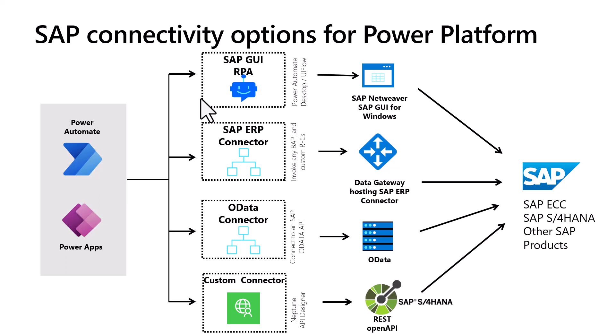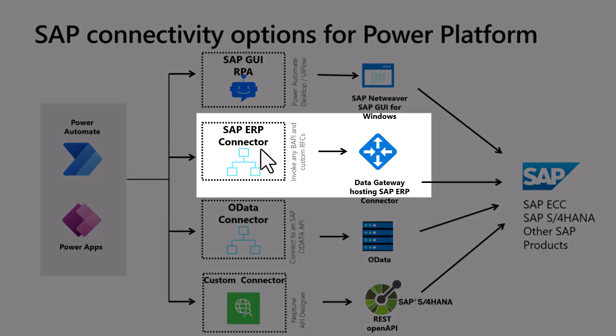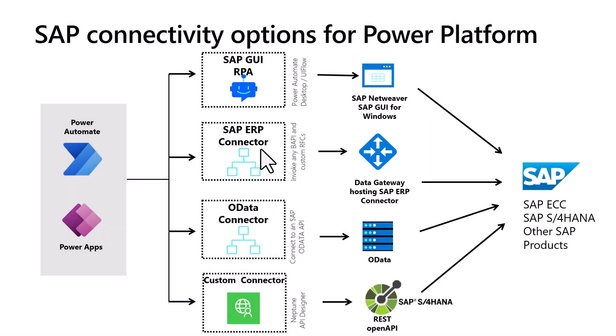It is a UI-based automation. When we move to API-based integration — like the certified SAP ERP connector — the connectivity is generally more stable, but you need more skill and knowledge about what's happening in your SAP system. With the ERP connector, you can fetch table information or trigger BAPIs and RFCs, but you need to know the technical names of tables, the name of the BAPI or RFC, and the structure of those settings.